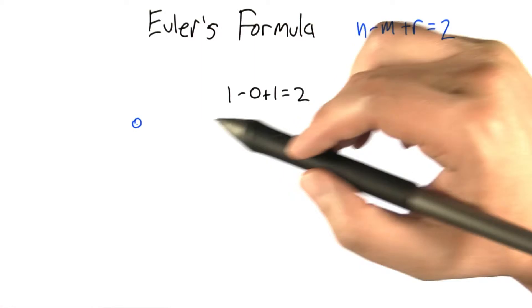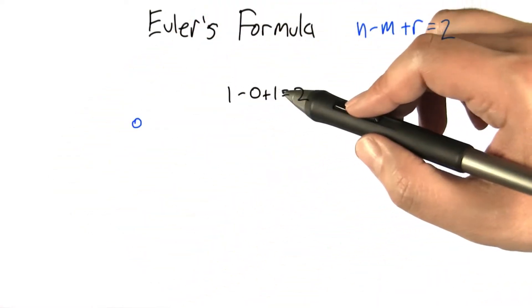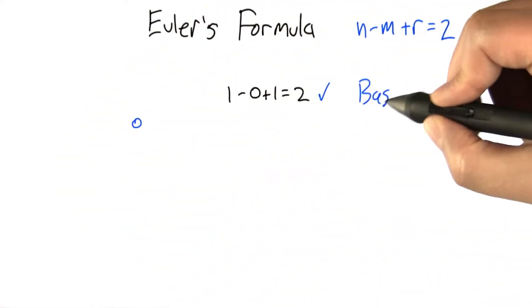And we've got one node, no edges, and one giant region around it. And 1 minus 0 plus 1 is indeed 2. So that's our base case.